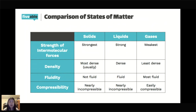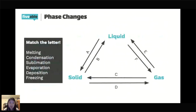Now we're going to talk about phase changes and do a fun activity. For melting, which letter goes with melting? It is B — solid to liquid. If you think of ice melting, you go from solid to liquid.